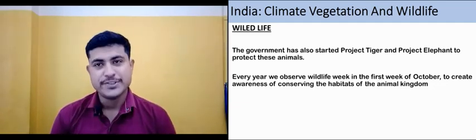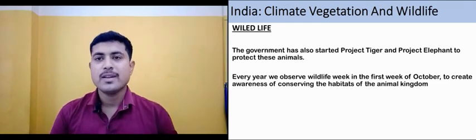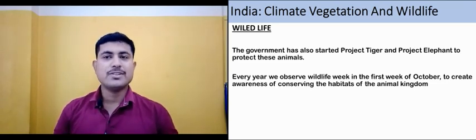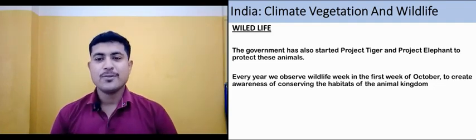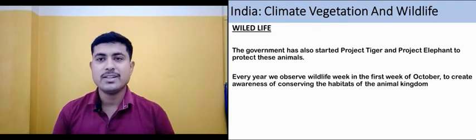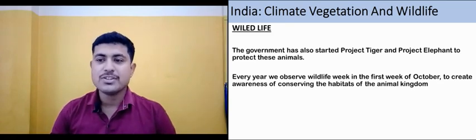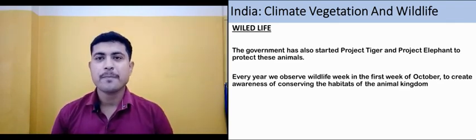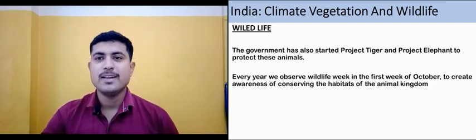Here we have completed our chapter. We studied the climate conditions in India, what sort of vegetation is found due to those conditions, and what sort of animals and wildlife exist because of that vegetation. We have seen the connection between climate, vegetation, and wildlife — a particular climate leads to particular vegetation, which supports particular animals in that area. Thank you.